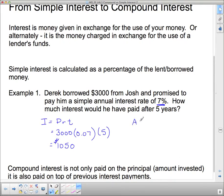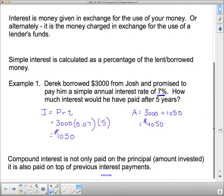And if we want to know the total amount they now have, because Josh still needs to get back this $3,000. So he gets the $3,000 plus $1,050 interest. So that's $4,050. Okay. So for lending his money out for 5 years, he now has another $1,050 more.